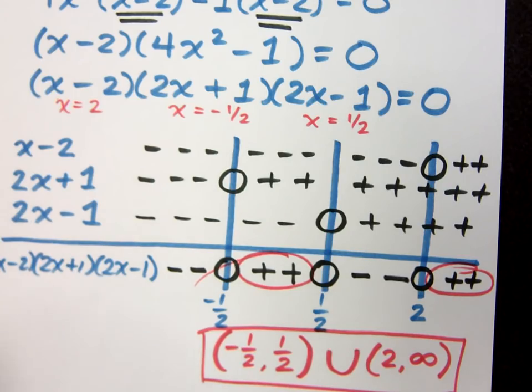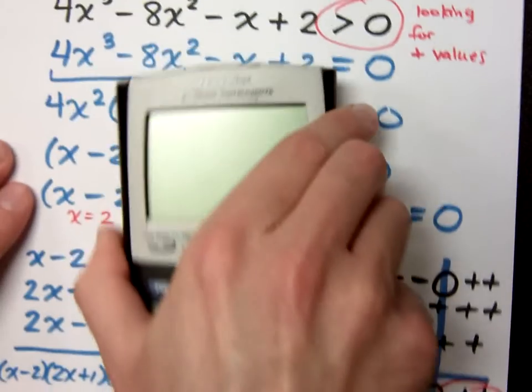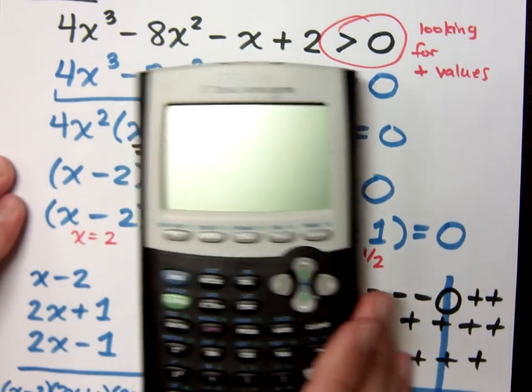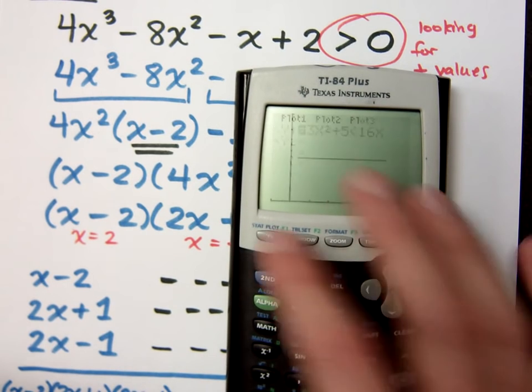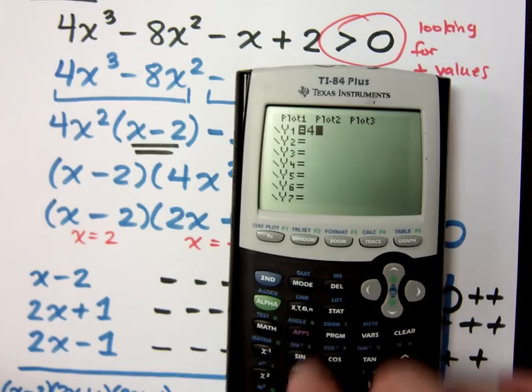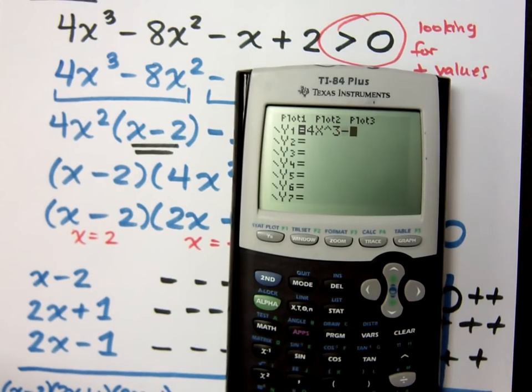Well let's look at this in terms of the graph. I want to make sure we understand the connection that we have between the graph and the inequality itself. So let's come up here and look at this guy. If I graph 4x to the third minus 8x squared minus x plus 2.